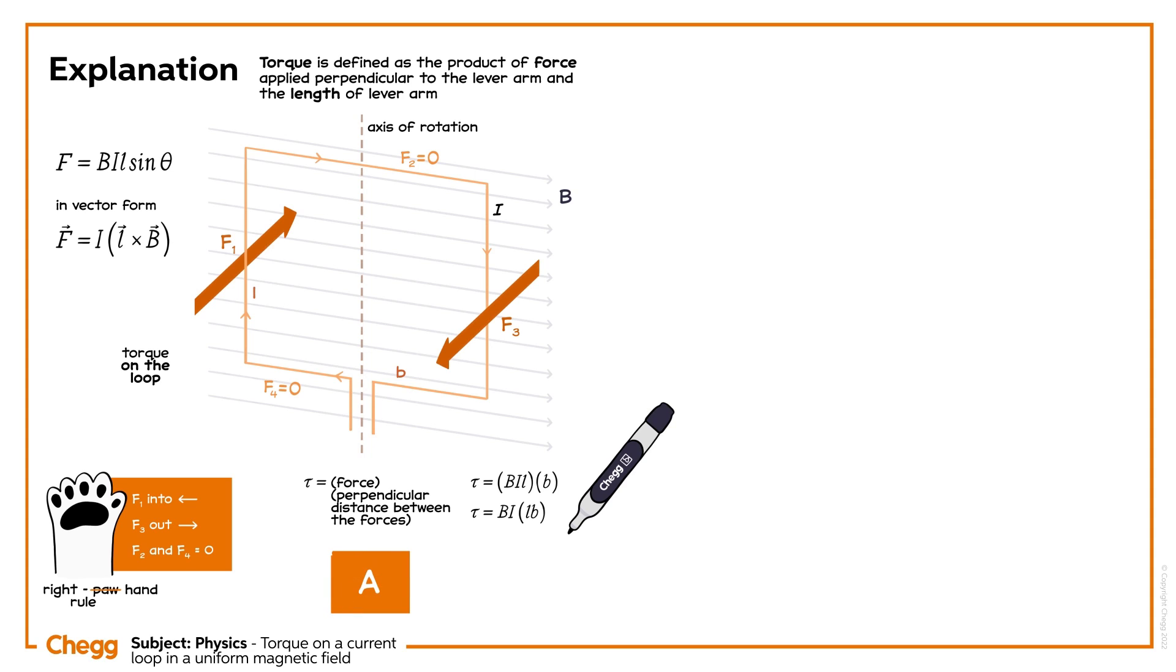We know that the area A of a rectangle is calculated by multiplying its length and breadth. Therefore, the torque on the loop will be calculated as torque is equals to b i a.